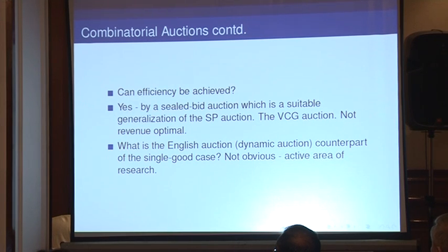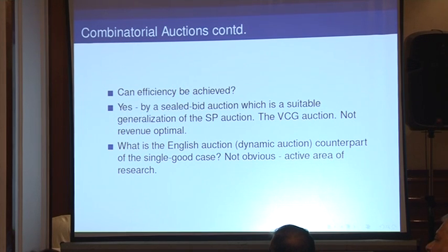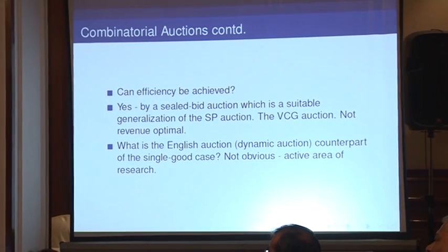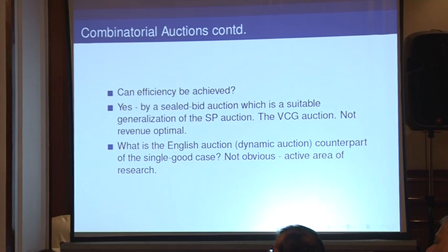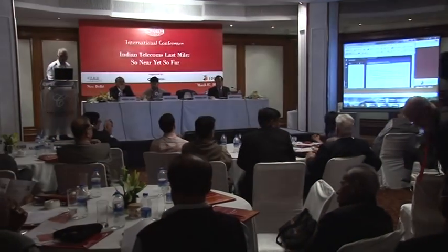Since the VCG is a sealed-bid auction, can one find a dynamic or English-style auction which replicates it — just as the standard English auction replicated the second price or Myersonian auction? This is again a very hard theoretical question with a huge amount of research in the literature, and it's fair to say there isn't a clear answer. I hope you get an idea that there is a huge and rich literature out there. I now invite Mr. Rajat Mukhaiji.